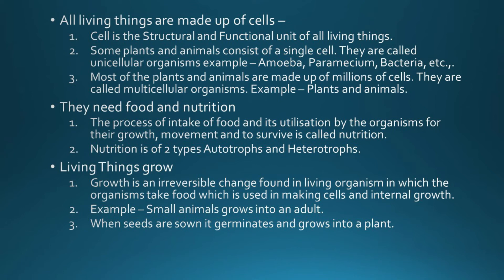Most of the plants and animals we see around us are made up of millions of cells and they are called multicellular organisms. In multicellular organisms the cells are not alike — cells are of different sizes and shapes and they perform different functions.